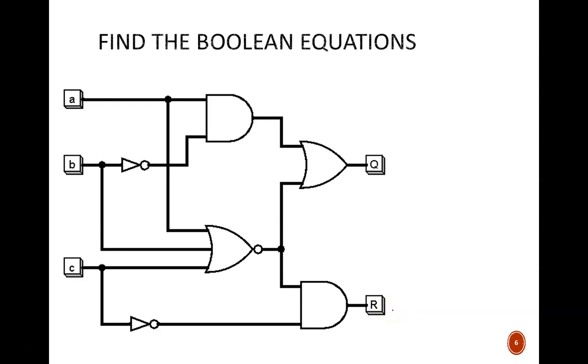Working left to right, we note the logic expressions of the signals leaving each gate. Up top, this gate is ANDing the inputs A and B prime, so the expression AB prime. Next is a NOR gate, which produces A or B or C quantity complemented. Then this OR gate produces this final equation for output Q. And this AND gate produces this equation for R.